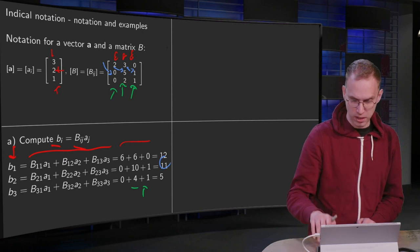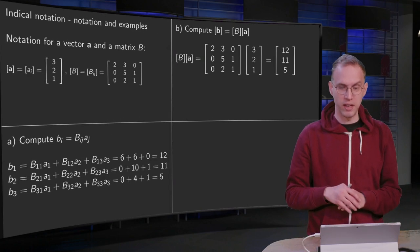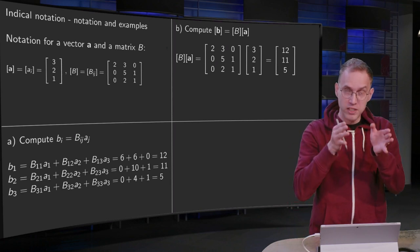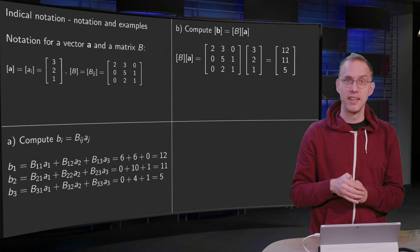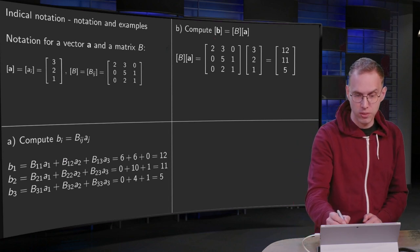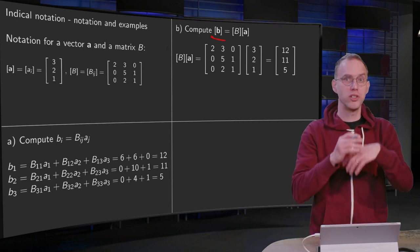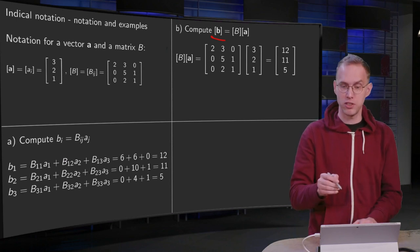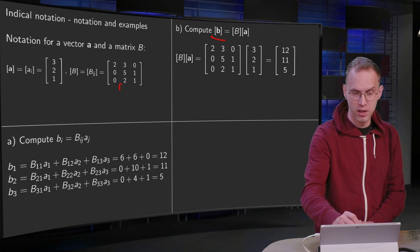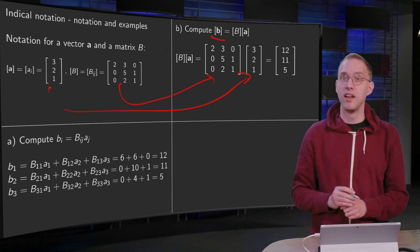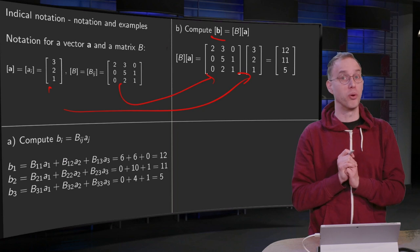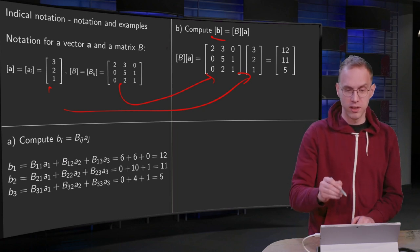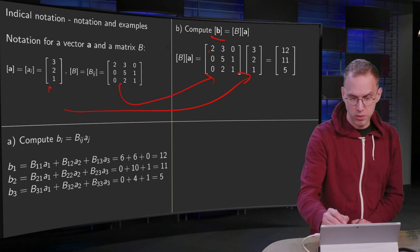Moving on to the next example. Now say, let's compute matrix B times vector a, and define that, call that vector b. So just take the normal matrix B, take the normal vector a, and compute B times a, just as you did with linear algebra. So put the matrix here, vector there, and use any rule you like, like row column rule. And then you get, voila.